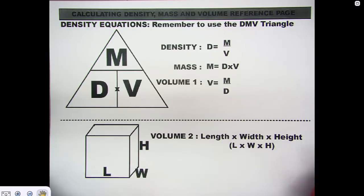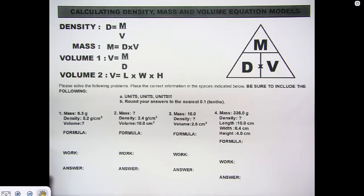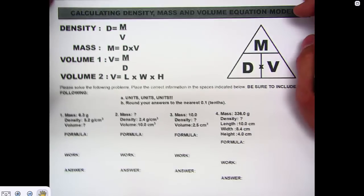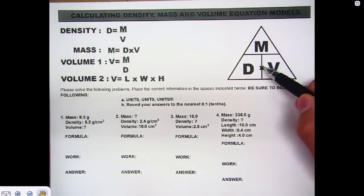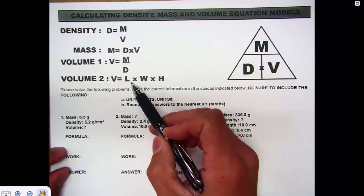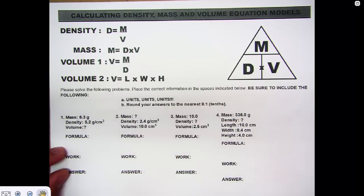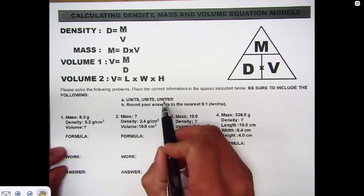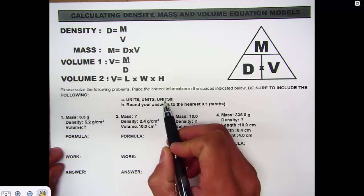Let's take a look at some practice questions. We have our equation sheet, fill out the DMV triangle, and this way we have all the equations we need. The only one you have to remember separately is length times width times height. On this test, whenever you calculate something, there are two things to always remember: first, you must include your units — do not forget them, you will lose easy points. Second, round your answers to the nearest tenths place — one space after the decimal.